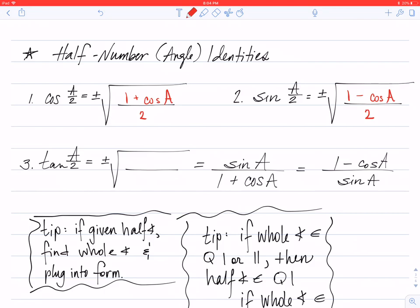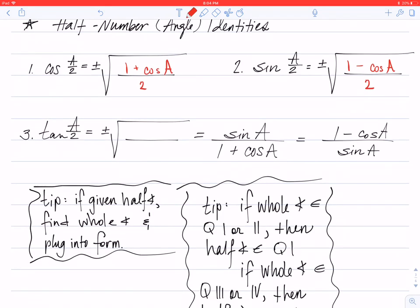The tangent half angle identity is going to be one minus the cosine of angle A divided by one plus the cosine of angle A. I've also included there two more for you that you are absolutely welcome to use when we're working with tangent half angles.